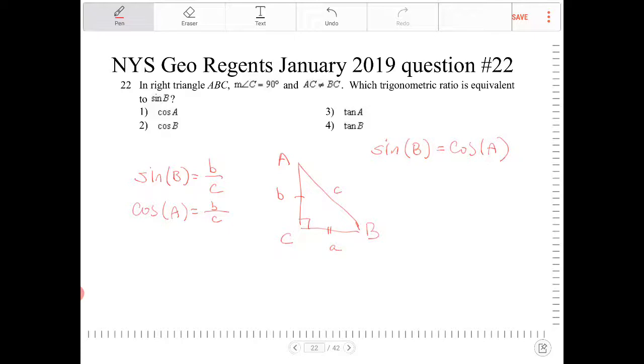So what has to be true about angles B and A in order for this to be true? Well, since A plus B plus 90 is equal to 180, A plus B, therefore, must equal 90. So this identity is true only if A plus B is equal to 90.